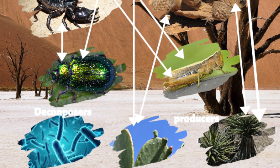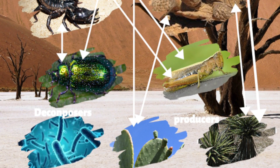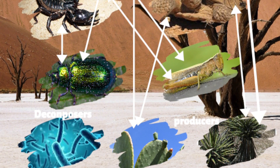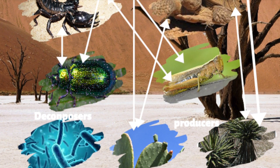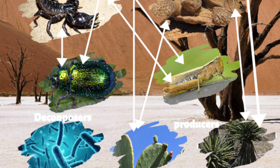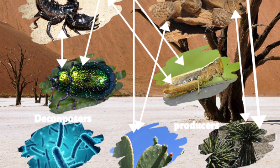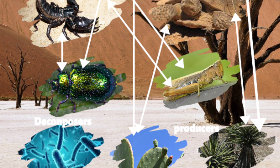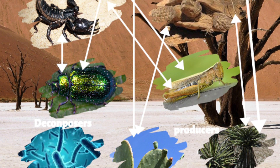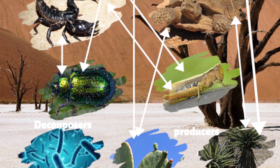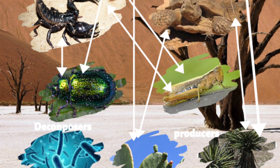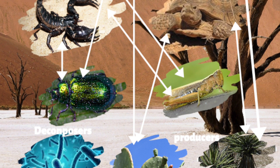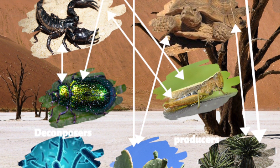Here is an example of a North American desert food web, which starts with the producers: plants such as yucca and prickly pear cactus. There are also decomposers — insects, fungi, and bacteria — which consist of grasshoppers, beetles, bacteria, and fungi.